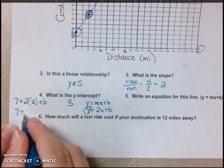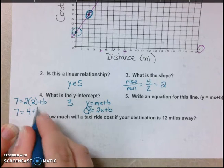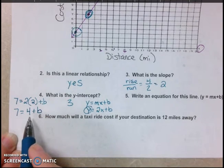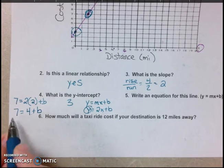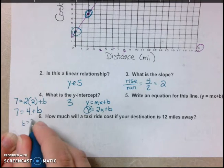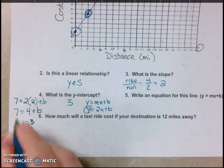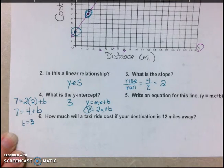So I take 2 times 2, which is 4. And I think, okay, 4 plus what equals 7? 4 plus what equals 7? So b must be 3. Because 4 plus 3 equals 7. So that's the method I want you to use when the math isn't real clear.